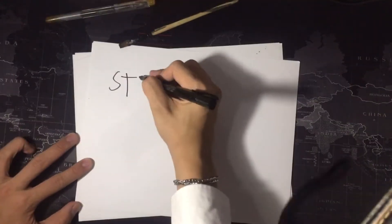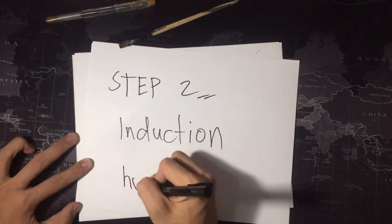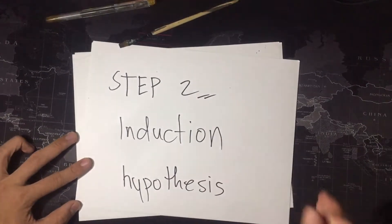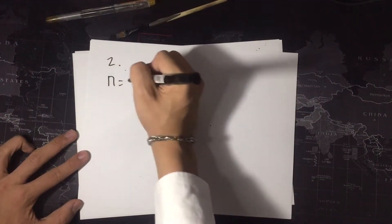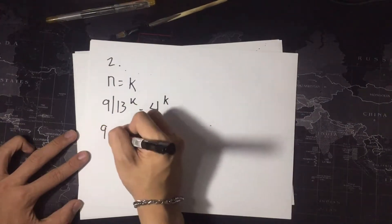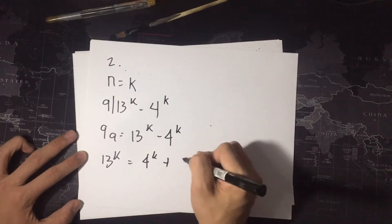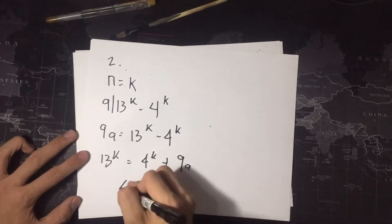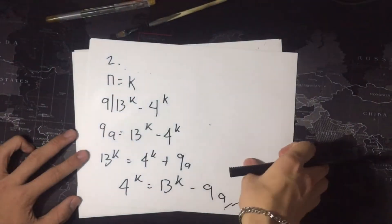In step 2, the induction hypothesis, we assume that n is equal to k. Therefore, the equation will be: 9 is divisible by 13 raised to k minus 4 raised to k, wherein 9a equals 13 raised to k minus 4 raised to k. From this, 13 raised to k equals 4 raised to k plus 9a, and 4 raised to k equals 13 raised to k minus 9a.